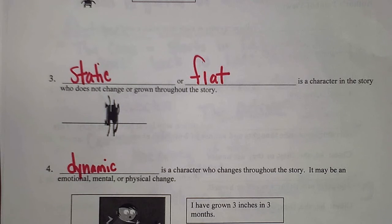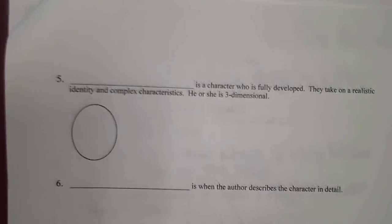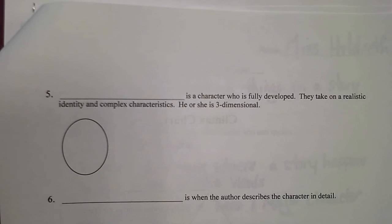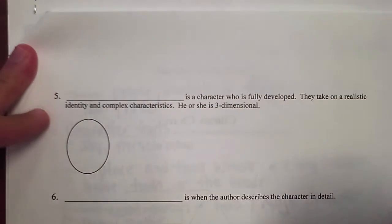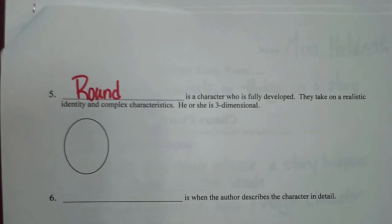On to the next page. Number five: a round character is a character who is fully developed. They take on a realistic identity and complex characteristics - they're three-dimensional. If the character seems like they could be a friend of yours or has traits that remind you of you, then they would be a round character.